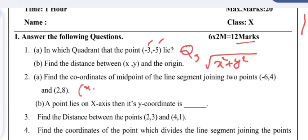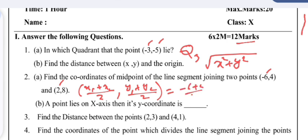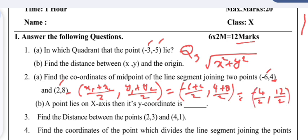To find the midpoint, the formula is ((x₁ + x₂)/2, (y₁ + y₂)/2). Here x₁ = −6, x₂ = 2, y₁ = 4, y₂ = 8. So: (−6 + 2)/2 = −4/2 = −2, and (4 + 8)/2 = 12/2 = 6. The midpoint is (−2, 6).